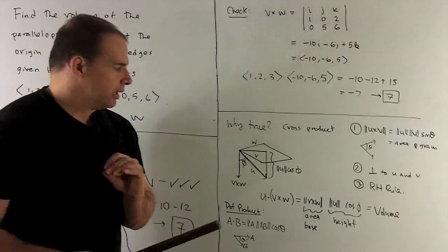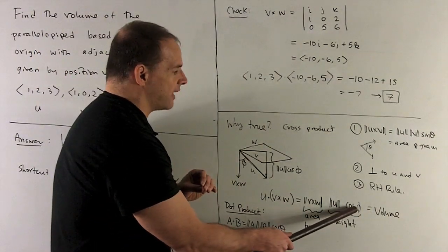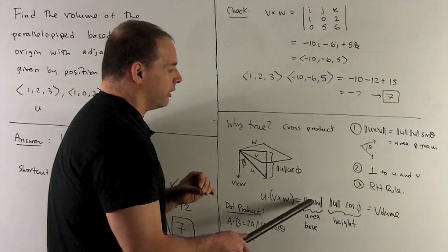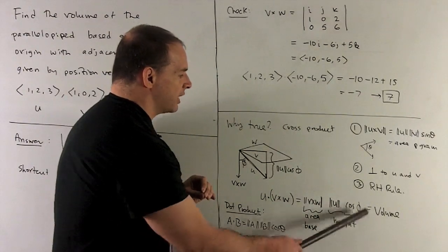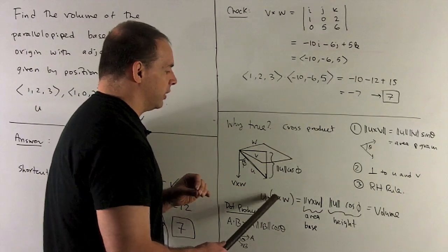So let's unravel that here. So what does that say? This says I have the cosine of the angle between U and V cross W, so this thing here is just going to be the dot product of U and V cross W.